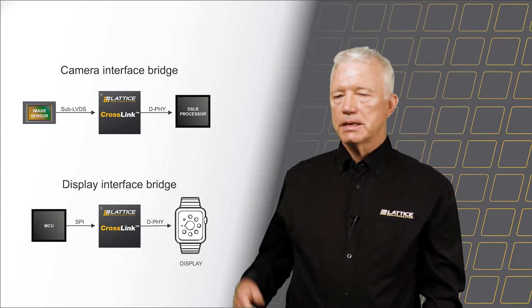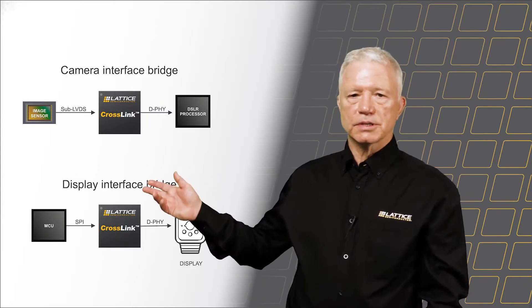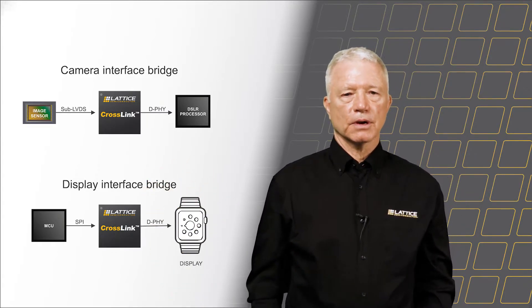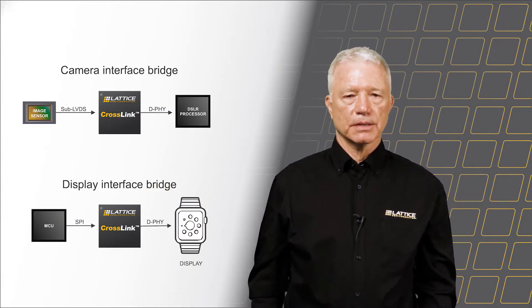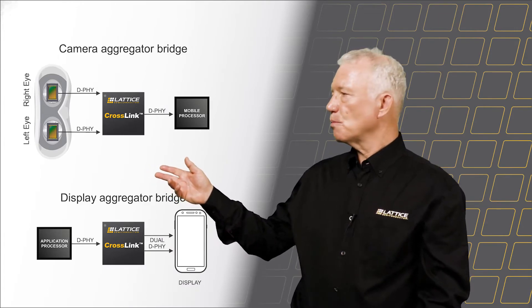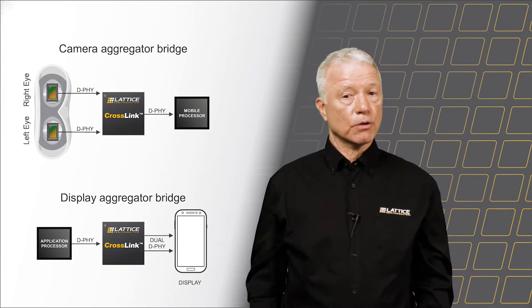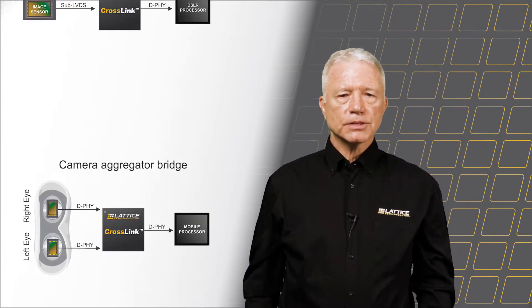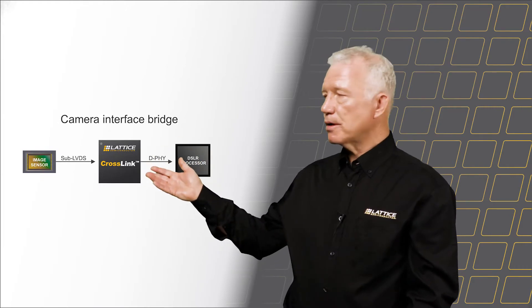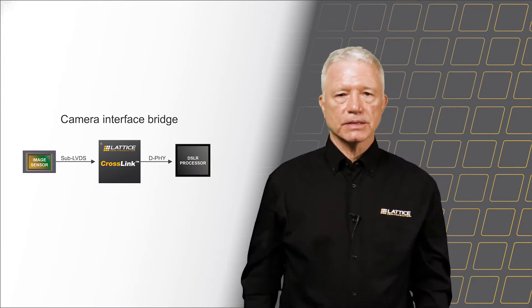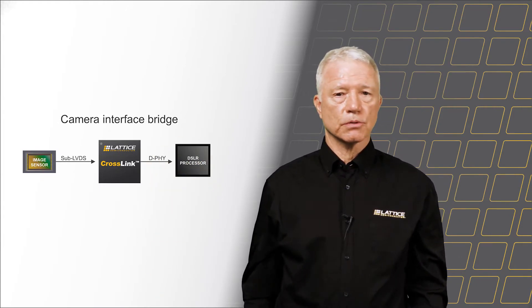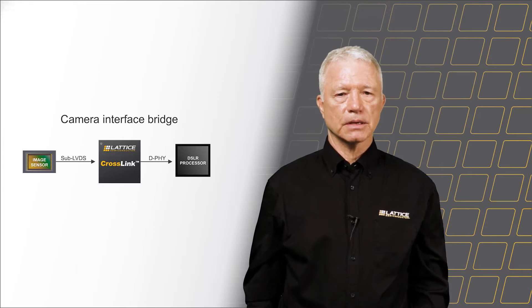Here is a selection of typical use cases that we see. These examples show simple bridging for cameras and displays, and these examples show more complex applications where we aggregate signals. Let's use the camera interface bridge as an example to illustrate how these solutions are implemented with the Crosslink device and Lattice tools.